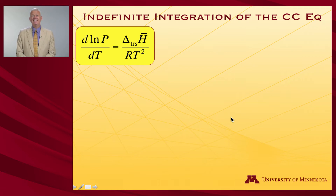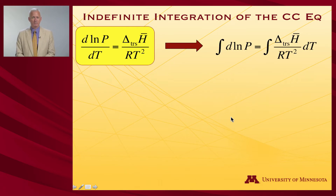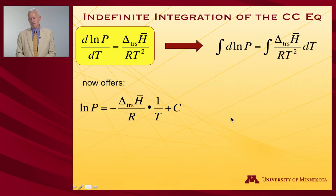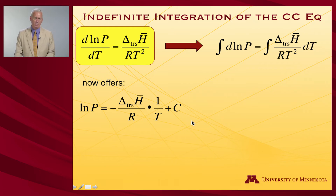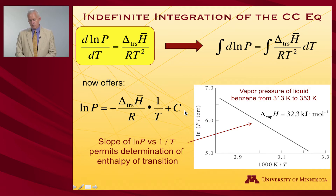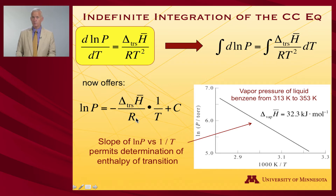Now let's think about doing an indefinite integration of the Clausius-Clapeyron equation instead of a definite one. In that case, I won't have limits on my integrals. I'll still get log P on the left-hand side, and the quantity shown on the right-hand side plus an arbitrary integration constant. What this tells me is that log of the pressure, if plotted against 1/T as I vary the temperature, ought to give me a line with a slope of the vaporization enthalpy divided by R. So if you want to know how to determine a vaporization enthalpy, this would be an experimental means to accomplish that.